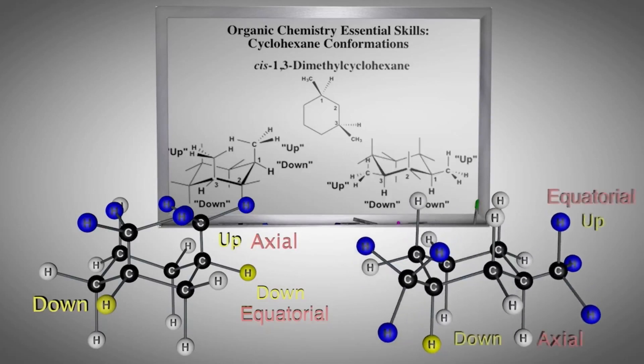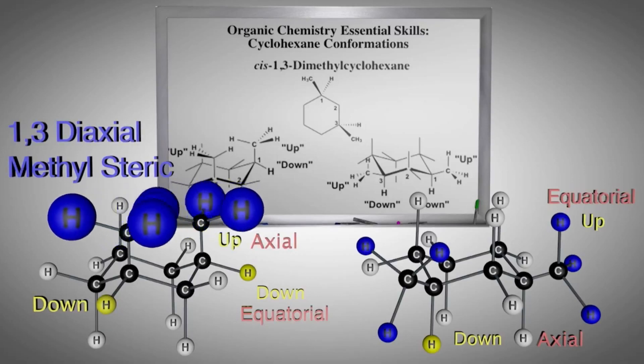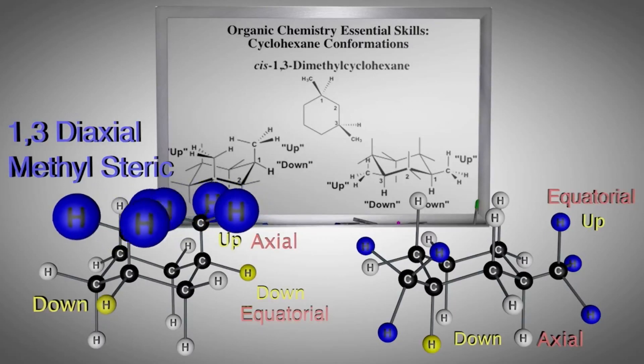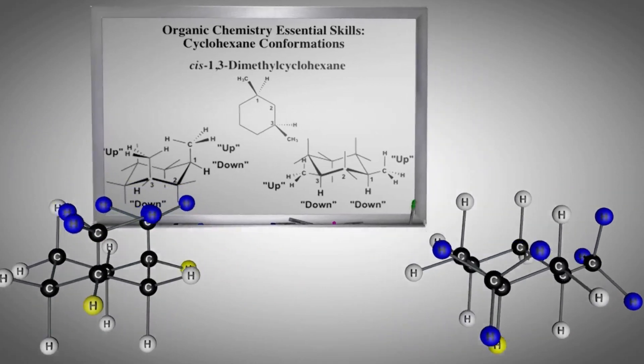Notice, both methyl groups start out axial, and then both become equatorial. And the methyl group is still up relative to the hydrogen on both carbons. As we demonstrated in the previous example, the methyl group is unstable in the axial position due to gauche relations with ring carbons. However, now there is an additional destabilizing effect, a 1,3-diaxial methyl steric strain. Thus, the diequatorial conformer will be more stable and lower in energy.